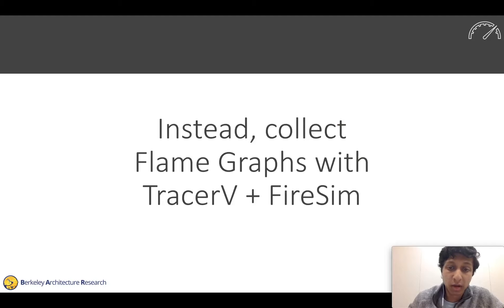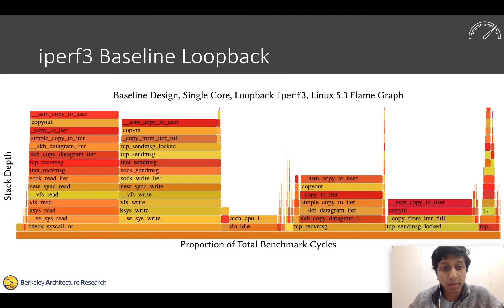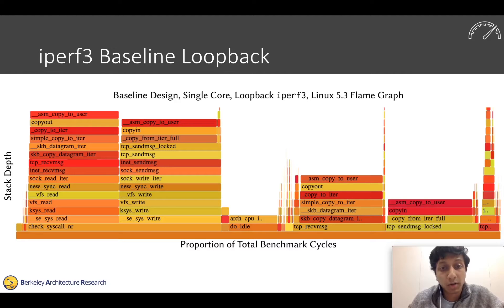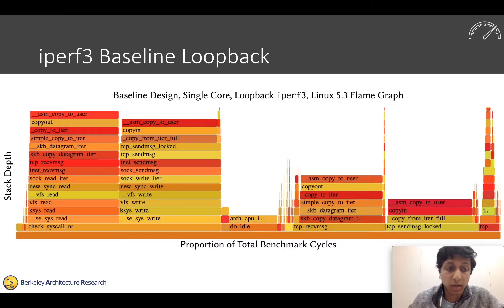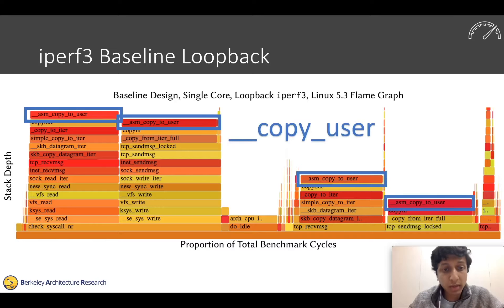Instead of relying on a tool like strace, let's collect flame graphs using Tracer5 and FireSim. Here's a flame graph collected using the trace from our simulated system, unwound and fed into the flame graph tool. When we look at a flame graph, we're looking for wide bars that are leaves — the x-axis is proportion of total benchmark cycles, the y-axis is stack depth. When we see something like ASM copy_to_user dominating our runtime, that's something we should look into.